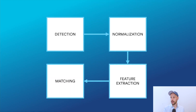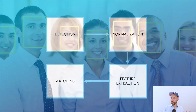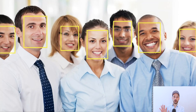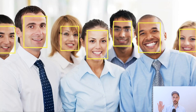First, detection. Detection is what your camera does when, for example, it focuses on a specific face that you're trying to take a picture of. Essentially, it's trying to find in an image where the faces are — the regions of interest. It's just checking where the face is in the image.